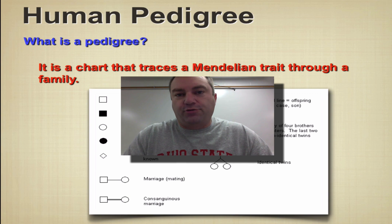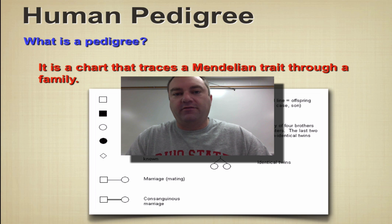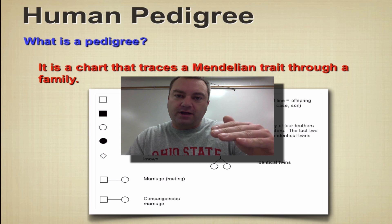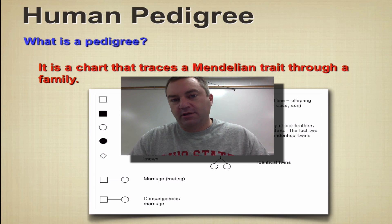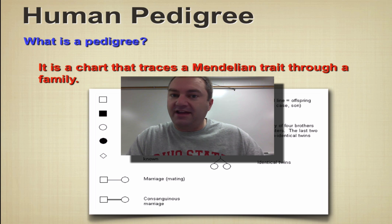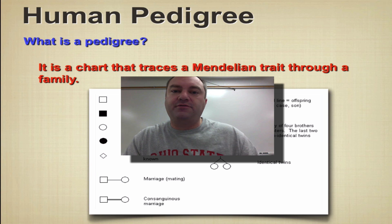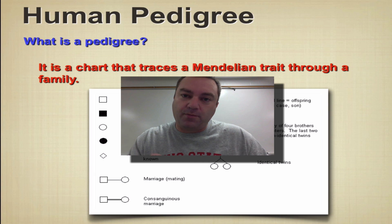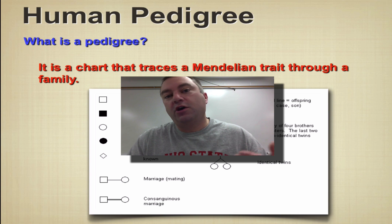Welcome to episode three from chapter 14. In this episode, we're going to cover what a pedigree is. Pedigrees are used to follow a Mendelian trait through a family tree. A pedigree is essentially a family tree showing how members of your family are related to each other, and we're also going to mark who is showing a Mendelian trait and who is not.